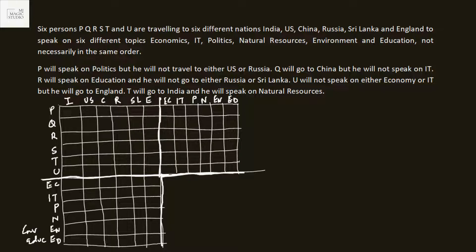P will speak on politics — done. But P will not travel to either US or Russia, so we put crosses accordingly: US person is not speaking on politics, Russian is not speaking on politics. Q will go to China, so P is not visiting China and the Chinese person is not speaking on politics. Q will also not speak on IT, so the Chinese person is also not speaking on IT.